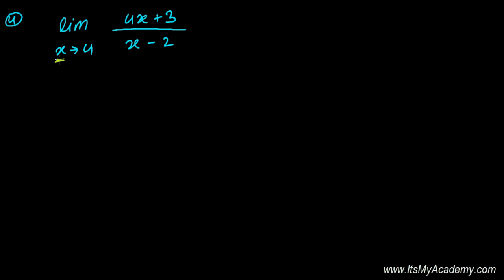So when I plug the value of x as 4, it will be 4 times 4 plus 3, that is 16 plus 3, that is 19, and 4 minus 2 that's 2. So it's 19 over 2. So I'm getting some definite number.